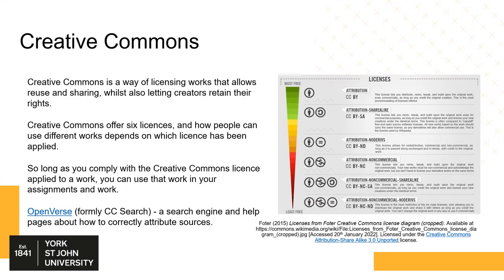A lot of audio and visual materials are now licensed under Creative Commons licences. Creative Commons is a way of licensing works that allows reuse and sharing, whilst also allowing creators to retain some of their rights. Creative Commons offers six licences using four different licence elements. The elements include: Attribution (BY) — you can use the resource but must give credit to the original creator; Share Alike (SA) — you can use and modify the resource but must retain the same licence terms; Non-Commercial (NC) — you can use the resource for any purpose so long as it's non-commercial; and No Derivatives (ND) — you can use the resource in its original form but cannot modify it without obtaining additional permission from the creator.